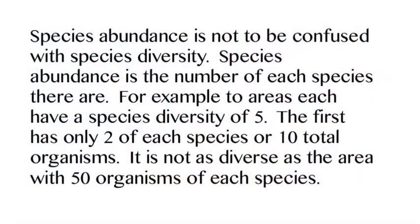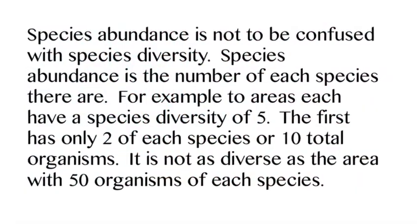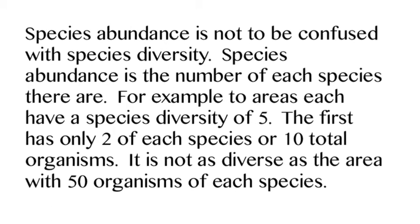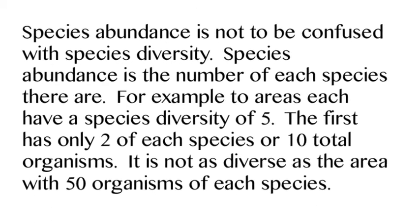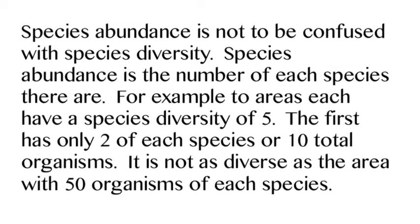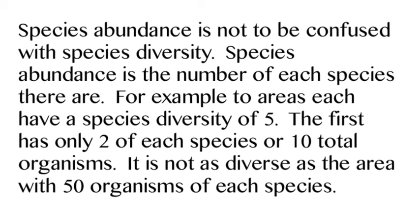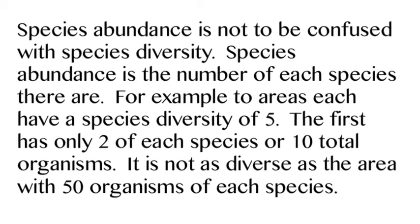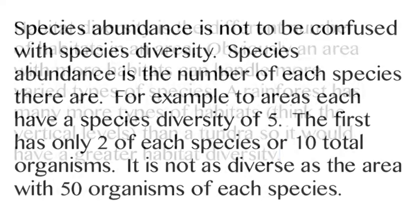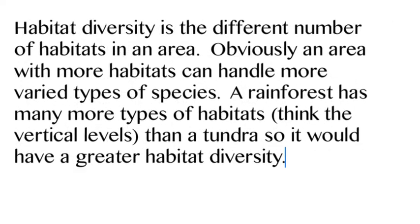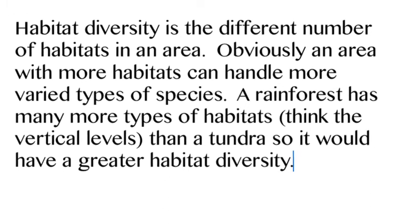But that's not the only way we measure this. We also look at species abundance, which is not to be confused with richness. If two areas both have 10 species but one has two individuals of each type and another has ten of each type, we'd say the one with ten of each has more species abundance and is more diverse.